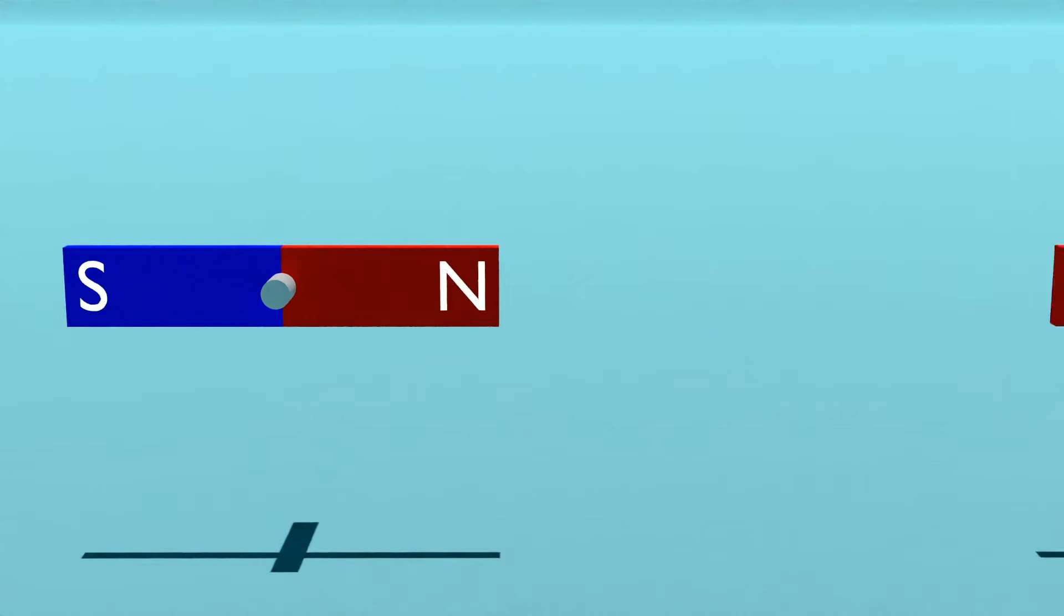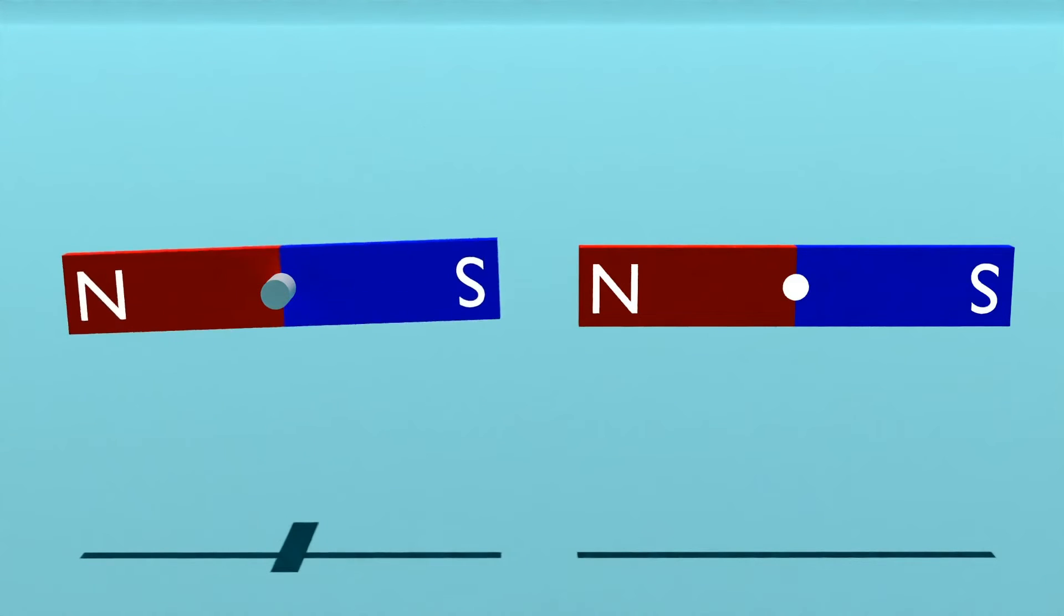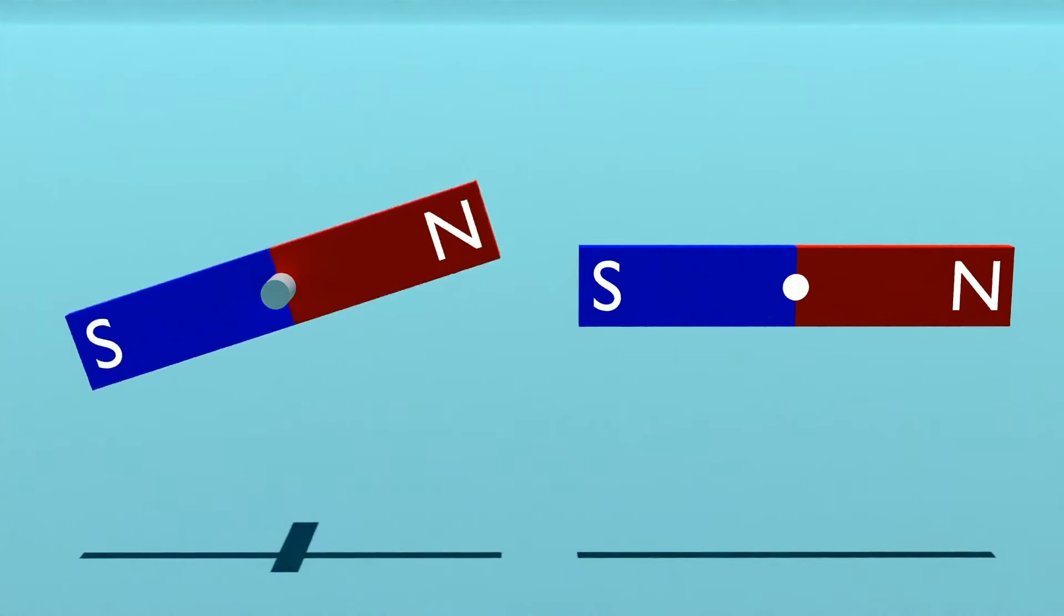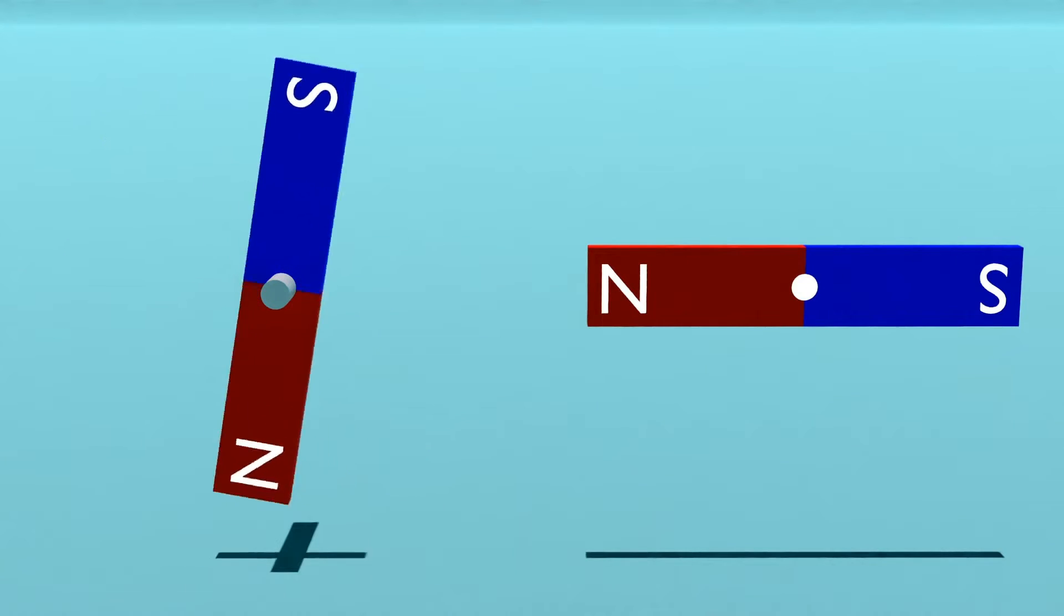Now switch out the magnet, opposite poles attract, and similar poles repel. If we keep switching out the fixed magnet, then the spinning magnet will keep spinning. But we can't turn these magnets off, which makes it difficult to control.